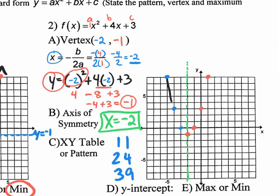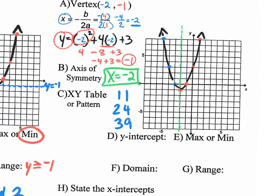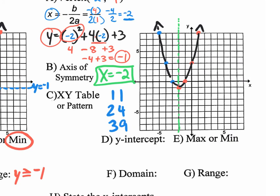Now let's draw our parabola through those coordinates, and put some arrows on it. Moving on to the y-intercept: where does this parabola cross the y-axis? It crosses right there — that coordinate is 0, 3. So you could put 0 comma 3 for the y-intercept, or you could just put the number 3 because it crosses the y-axis at the value of 3. Totally up to you.